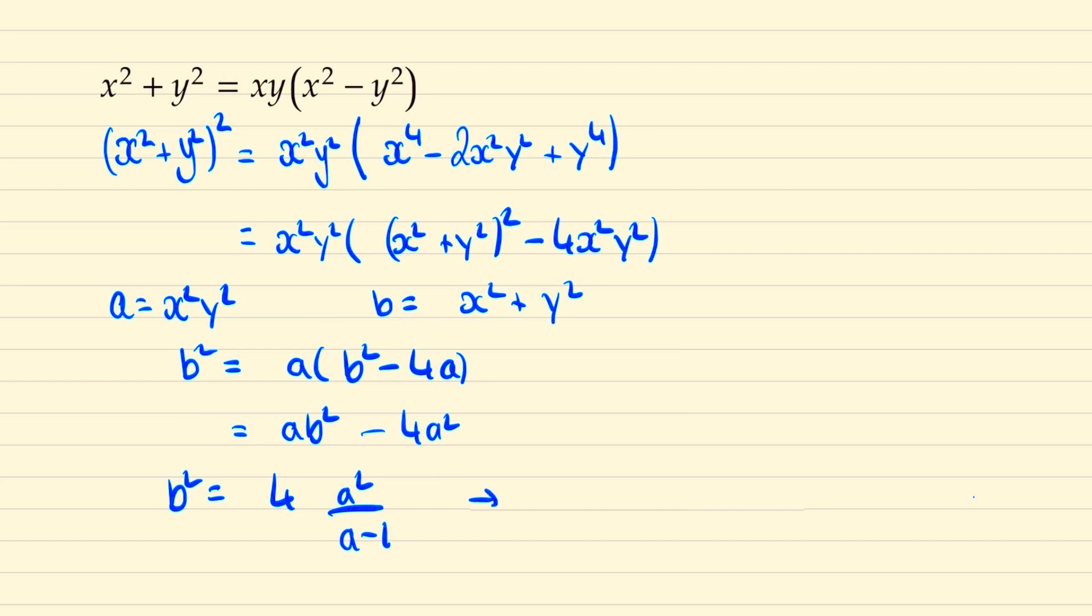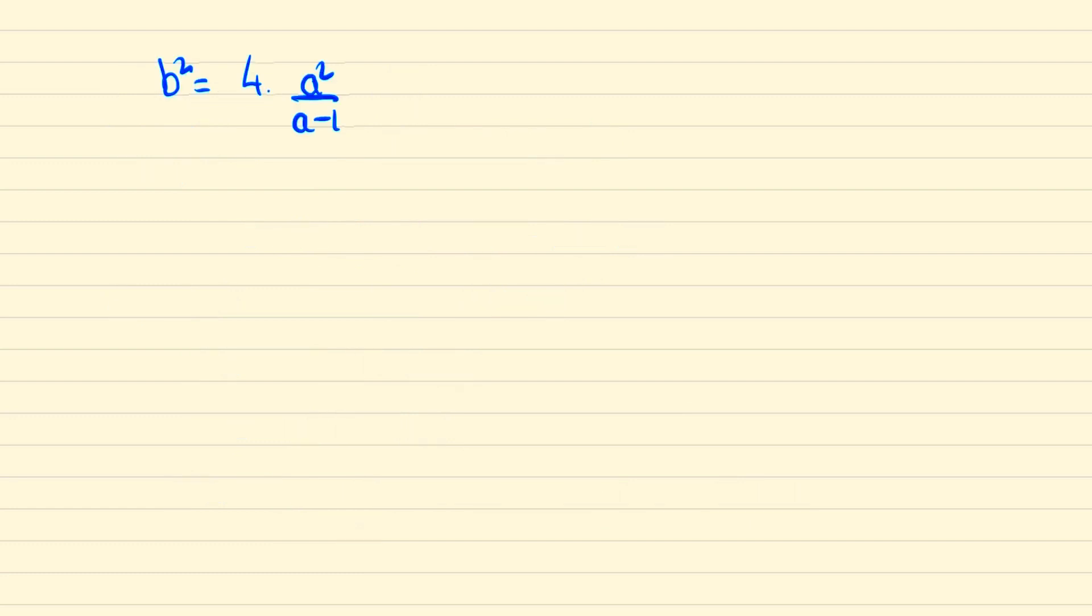And so from here it follows that a must be greater than 1 and b which is the sum of two squares must be bigger than 0. And so to find the minimum of b squared it suffices to find the minimum of a squared over a minus 1.